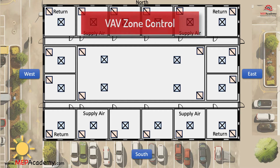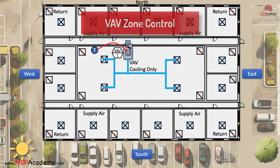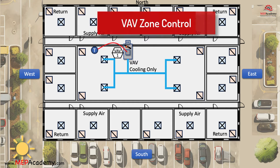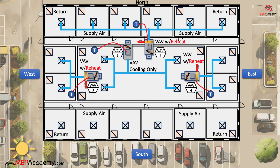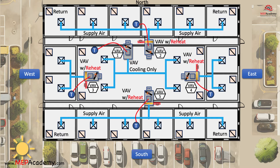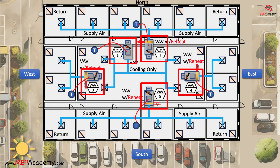VAV Zone Control. Variable air volume (VAV) systems excel in providing precise zoning control. VAV systems allow for individual temperature control in various zones or spaces within a building. Each zone has its own VAV box, which modulates the airflow to meet specific heating and cooling demands.